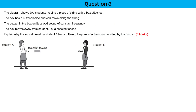The diagram shows two students holding a piece of string with a box attached. The box has a buzzer inside, which can move along the string and will emit a loud sound of constant frequency — so know that F is constant. The box is going to move away from student A at constant speed. Explain why the sound student A hears has a different frequency from the sound emitted by the buzzer.